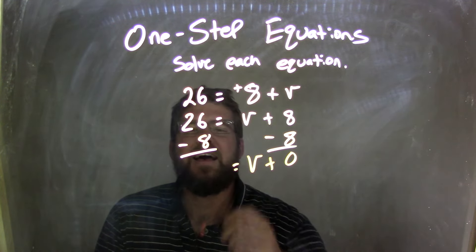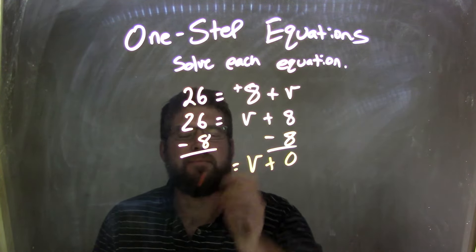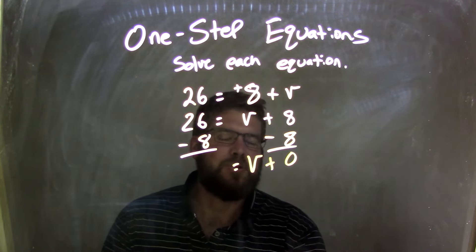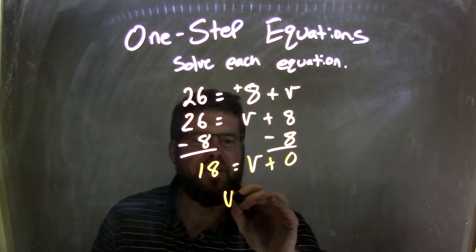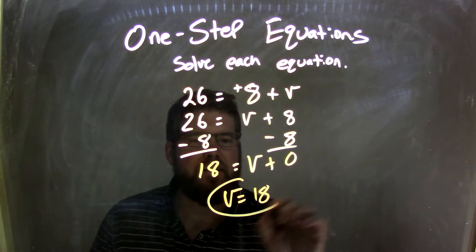I have the V I bring down here. Now I'm left with 26 minus 8. Well, that comes out to be 18. And so my final answer here, the plus 0 I don't need, is V equals 18. And there we go.